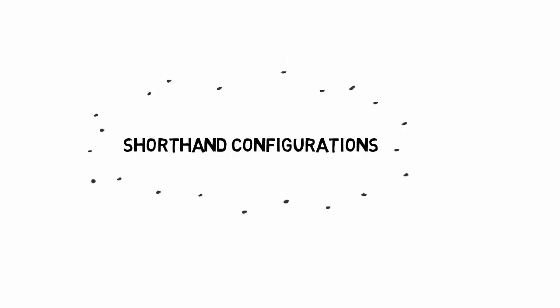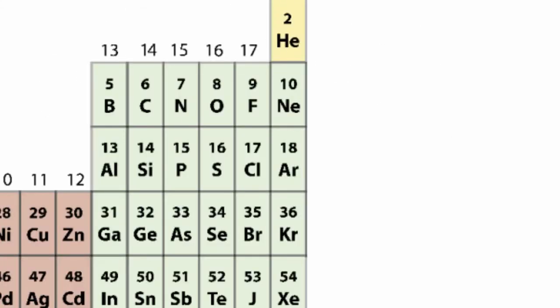To write a shorthand electronic configuration, use the chemical symbol of the previous noble gas in square brackets, for bromine it's argon, then write out the orbitals that are occupied by the valence electrons.